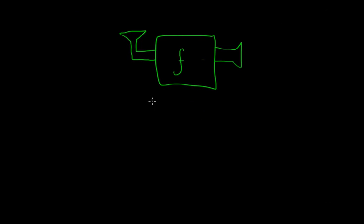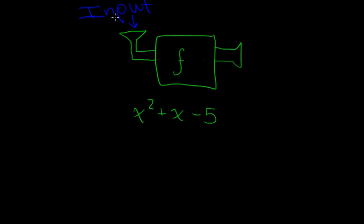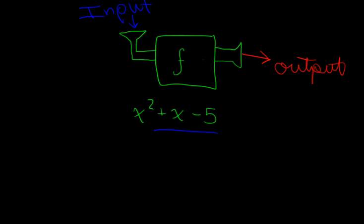A function, in math, you can think of as an equation — like x squared plus x minus 5. That could be your function equation. With a function, you always input something. And when you input something into your function equation, it changes the input and gives you one output. That's basically the definition of a function: one input, one output.